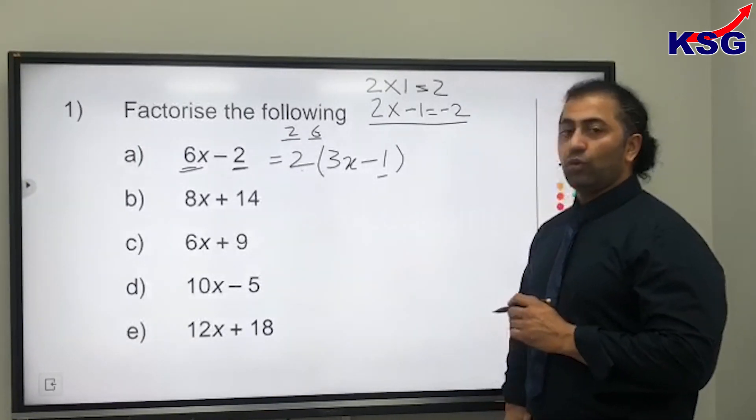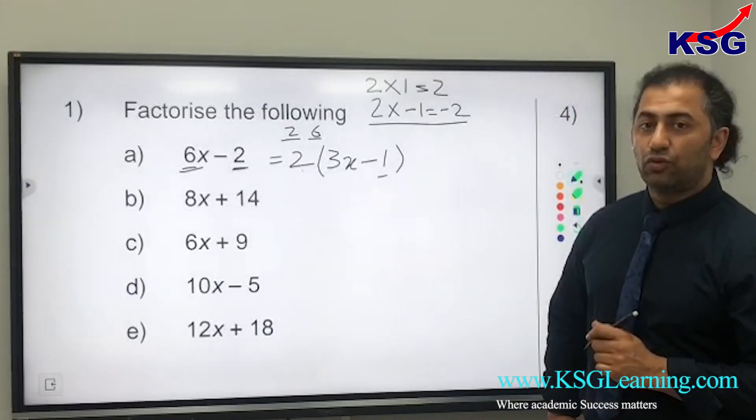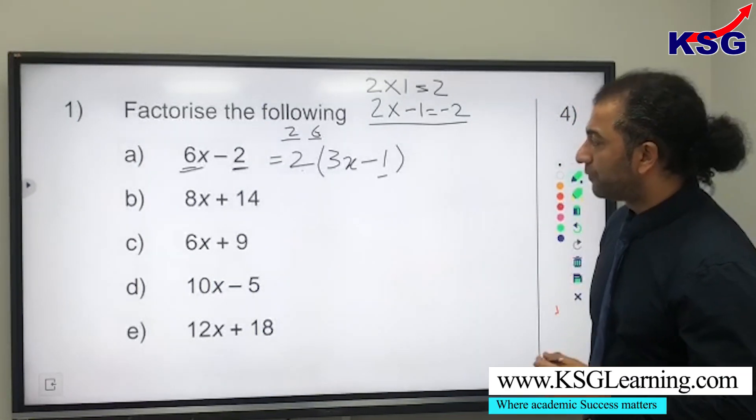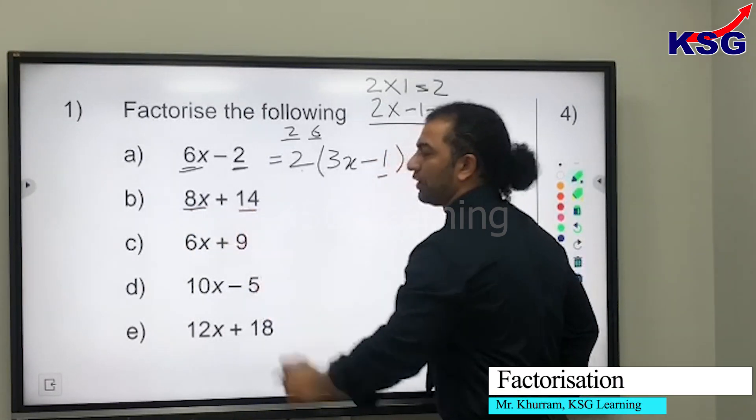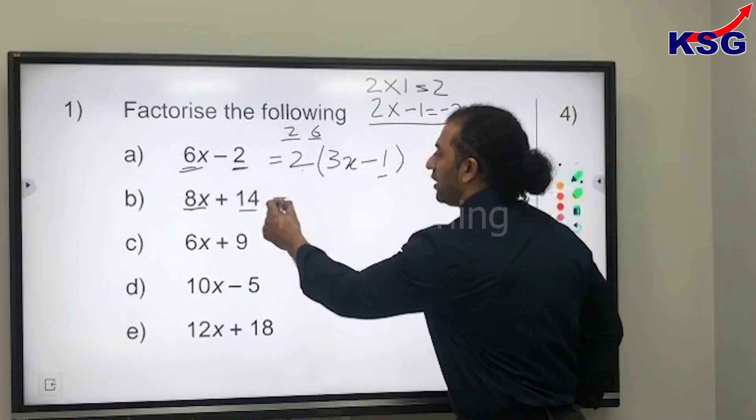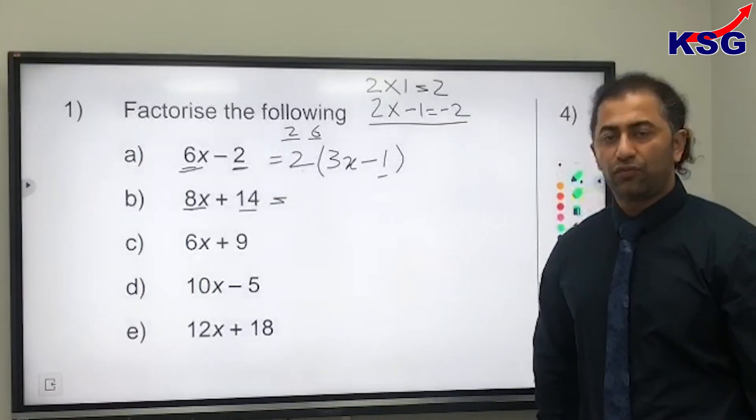This is the first question, that's all done. We put them back into the bracket, this algebraic expression. Now question b: I've got 8x plus 14. We need to factorize this. How do we do that?